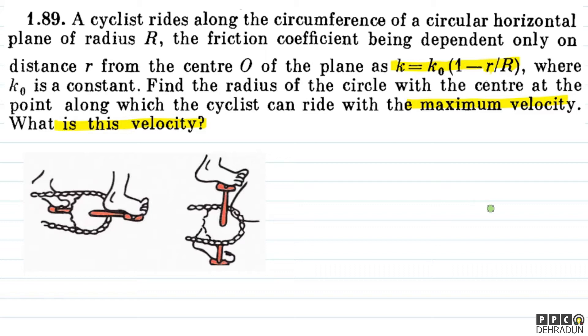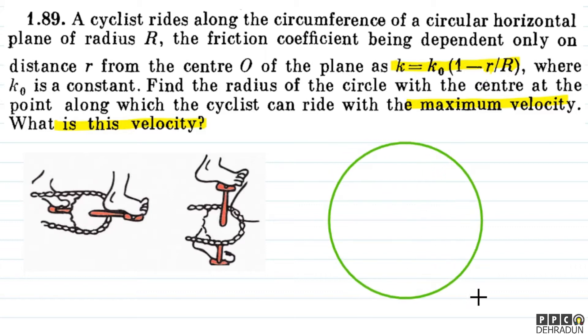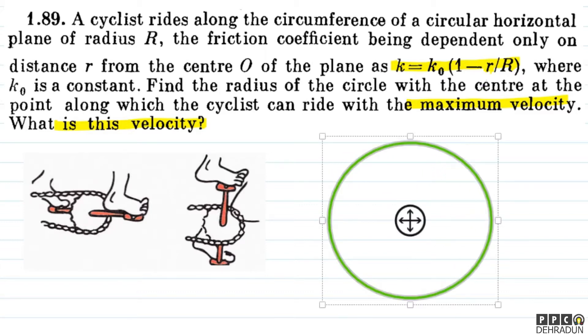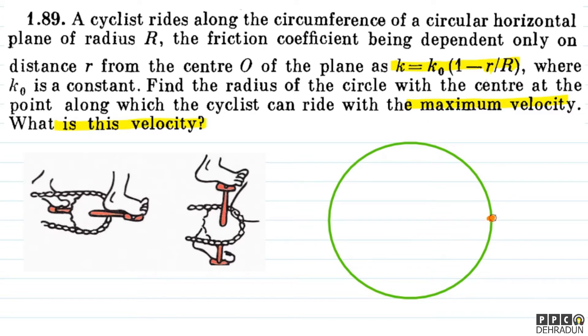Let's look at the top view. If you see the top view, the cyclist is moving in a circular path.